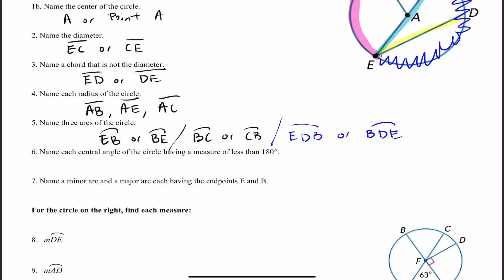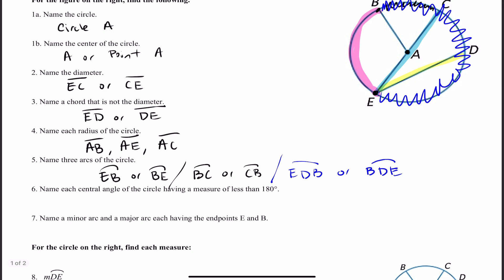Number 6: name each central angle of the circle having a measure of less than 180 degrees. With a central angle, the vertex must be at the center. So here's a segment and another segment joining at point A, where A is the center — this is a central angle. To name it: angle E, A, B — where A is the vertex, the middle letter. The middle letter is always the vertex, so make sure you include that.